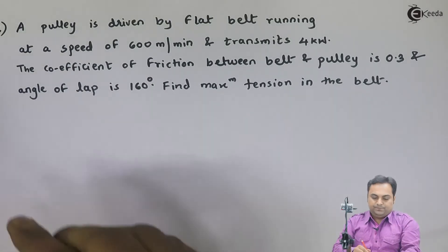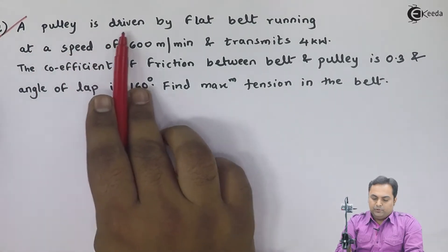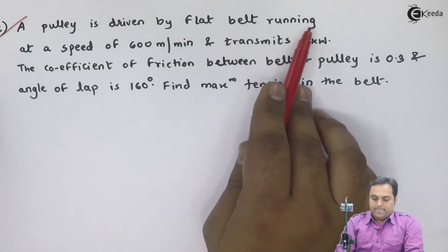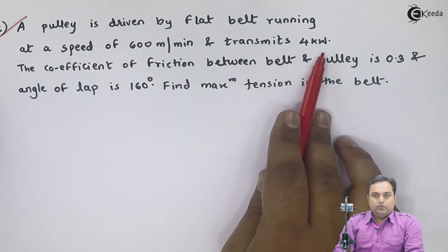Let us take the next question. I'll read what is given here. A pulley is driven by a flat belt running at a speed of 600 meters per minute and transmits 4 kilowatts.